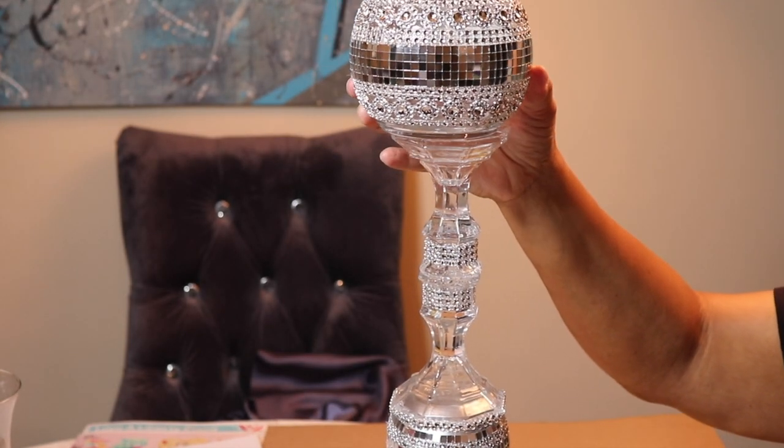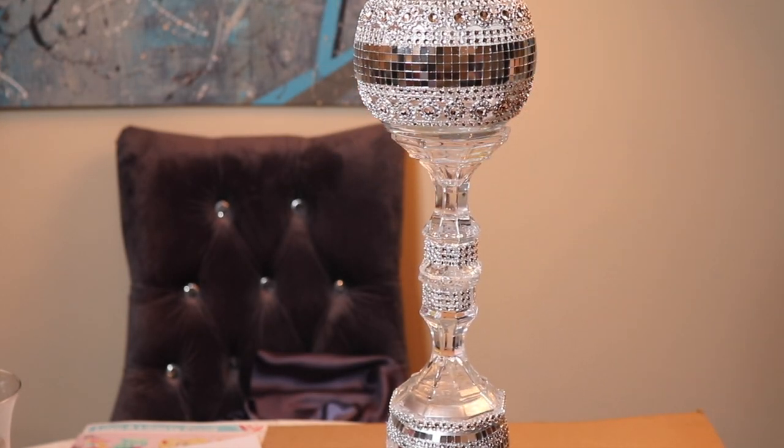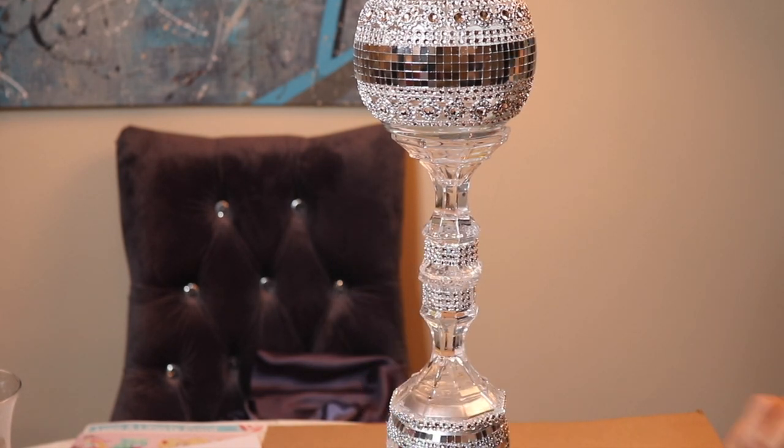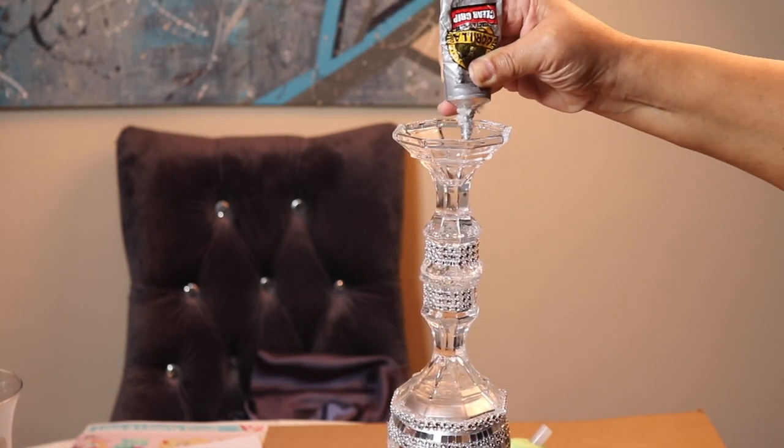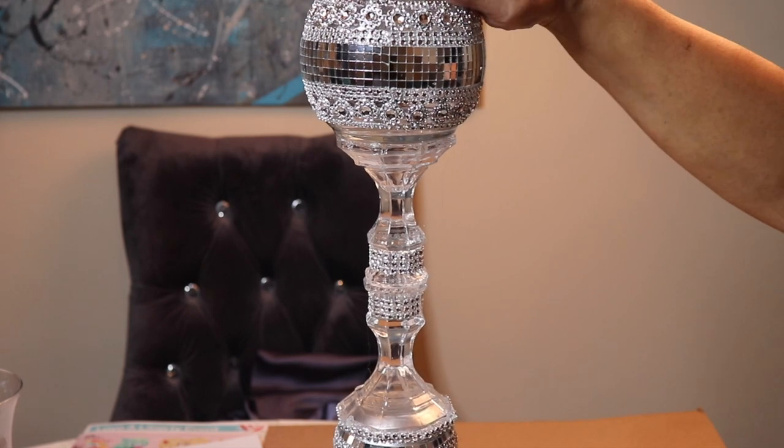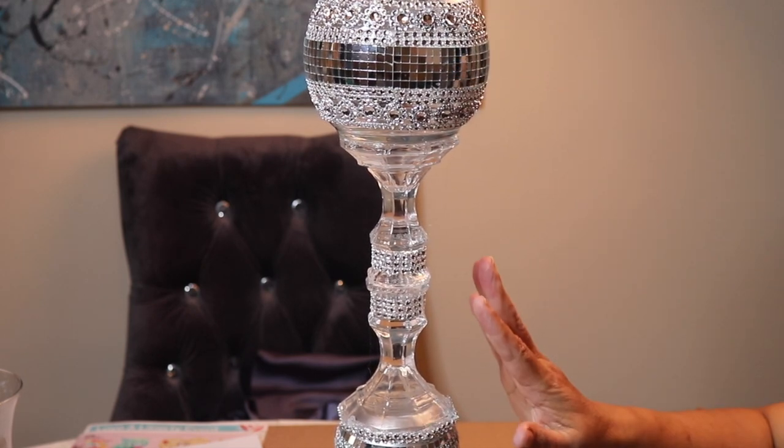Now it's time to add the top onto the base of the candle holder. Again, I'll be using my Gorilla Glue along with a little bit of the hot glue to glue it in place. This time you want to add the glue on top of the candle holder, not on the inside like before. Press it down firmly and then put it aside to dry.